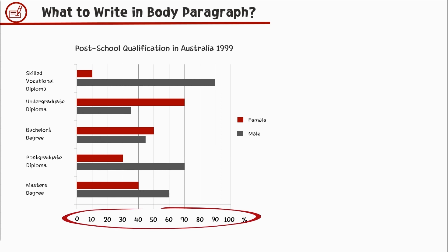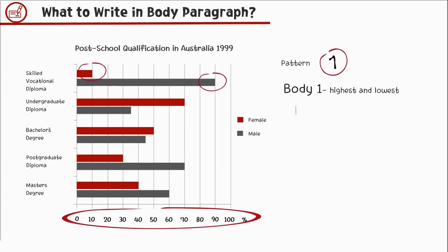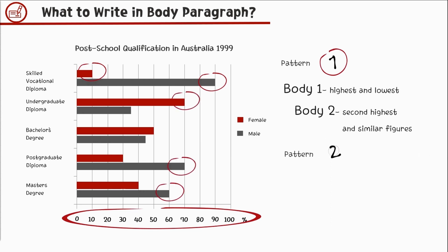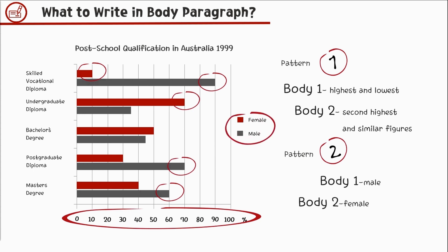However, please know that you cannot use a long list of numbers as it will confuse the reader. In grouping your data in a static bar, you have several ways. One way is to describe the highest and the lowest in your first body paragraph, and write about the second highest and similar figures in your second body paragraph. Another way is to divide it by gender — comparing the male highest figure to female in body 1, and describing the female highest figure compared to male in body 2. For today's body paragraph, we will use the latter. Let's study what makes a body paragraph a band 9.